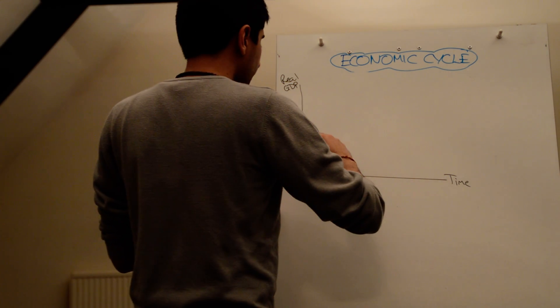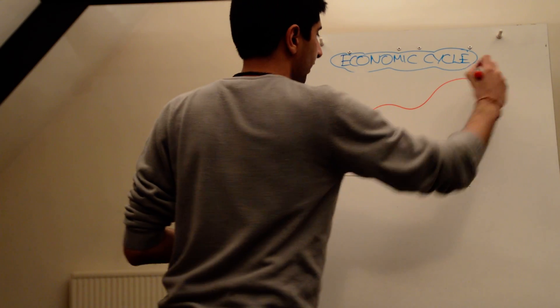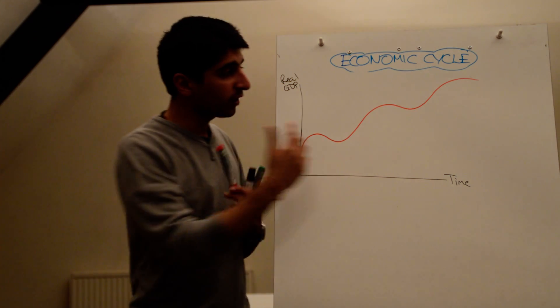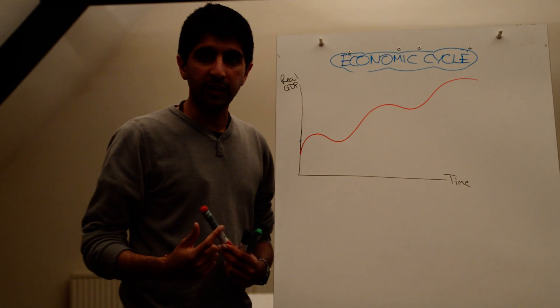So economic growth, instead of just being a smooth line upwards, tends to go something like that. Yes, over time it increases, but it's never smooth. It tends to fluctuate like this.